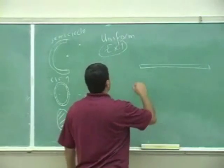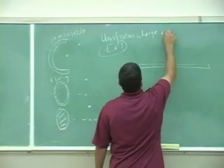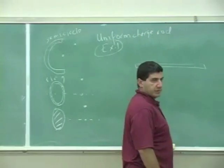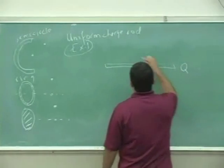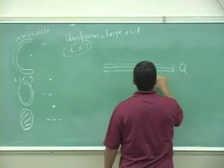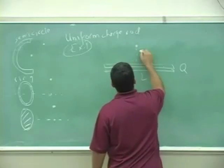We'll do the first uniform charge rod. Let's say the charge is Q, the length is L, and the distance here is D.